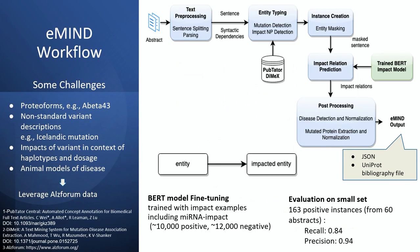This depicts the eMind workflow. We have a standard text processing module, then we identify variant and impact entities. We use PapTator to identify genes, diseases, and variants, and DiMex to link variants to the disease. Then we have a BERT model to predict the impact relation. This model has been fine-tuned with a dataset that contains relations between an entity and an impacted entity. Our hypothesis is that the way these two entities are related is independent of the object of that relation, so we use a heterogeneous dataset to fine-tune the model.